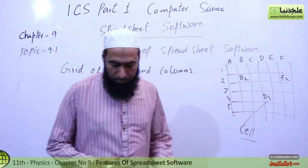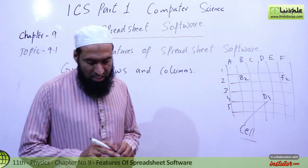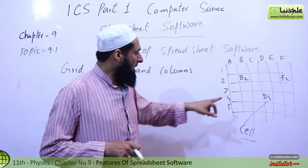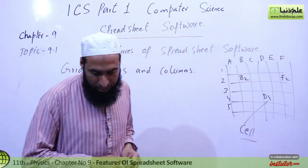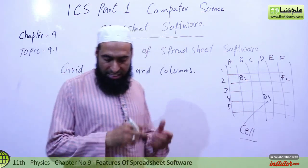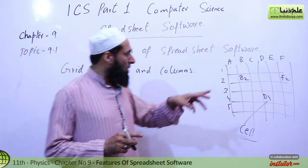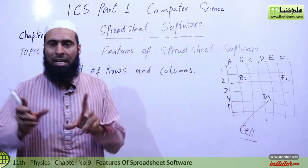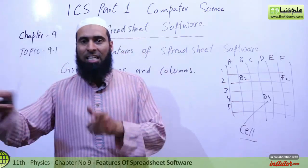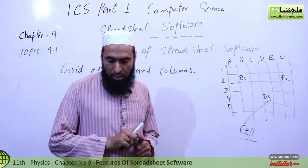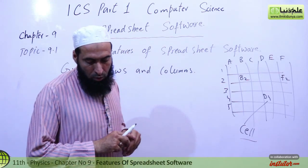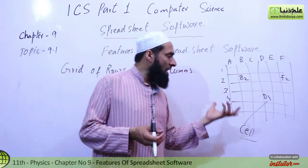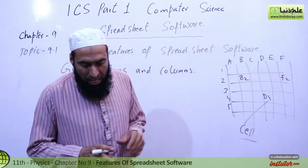Each cell has a reference number that is formed by combining the column letter and the row number — for example, B2, A1, or G18. A cell contains labels and values. The label is a text entry such as 'gross salary.' Values can be numbers — for example, 50, 100, or 200 — and you can also multiply or reference another cell's value.